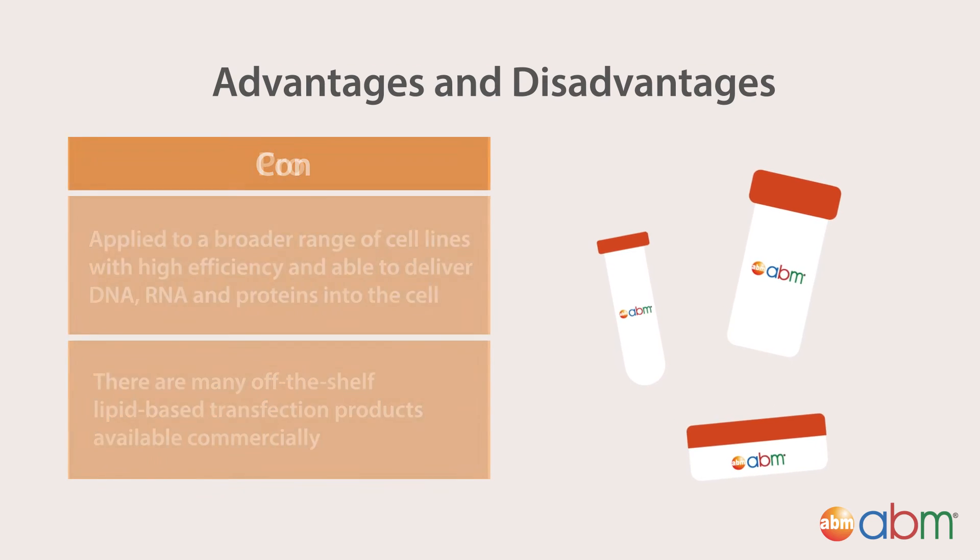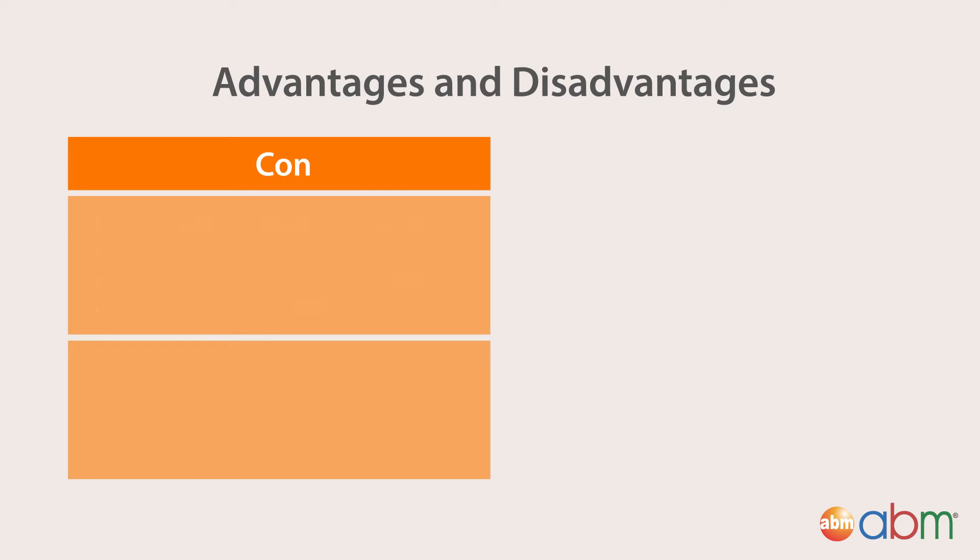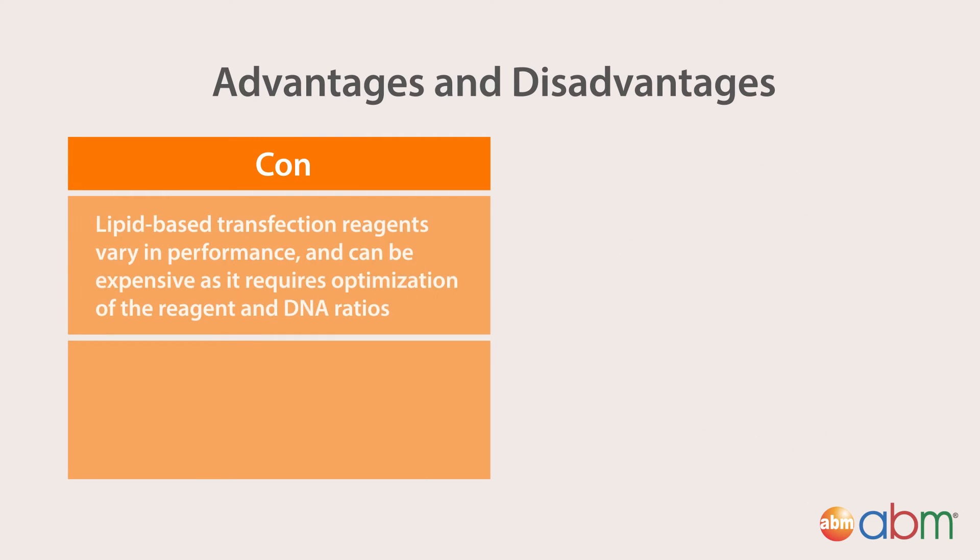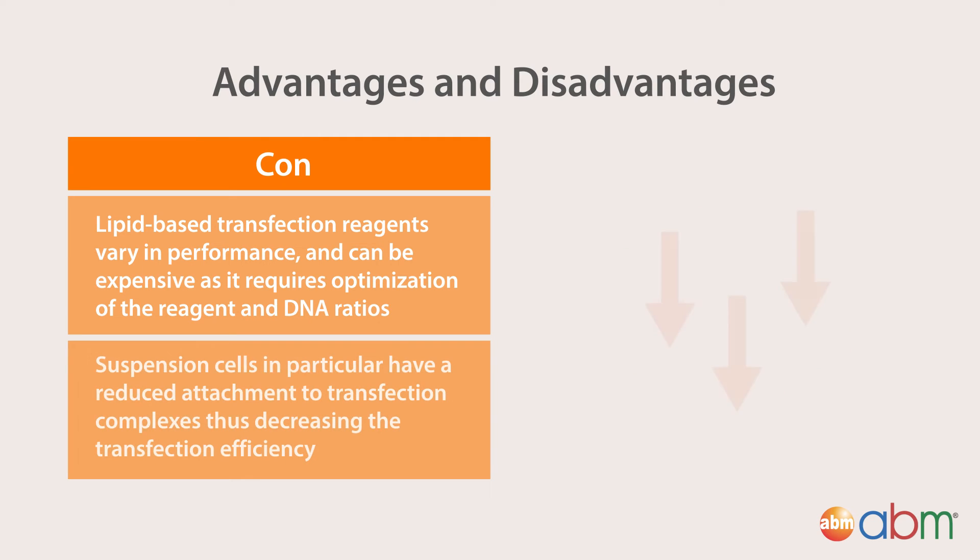Con: however, lipid-based transfection reagents vary in performance and can be expensive as it requires optimization of the reagent and DNA ratios to determine the optimal conditions for different cell types and culture conditions. Suspension cells in particular have a reduced attachment to transfection complexes, thus decreasing the transfection efficiency.